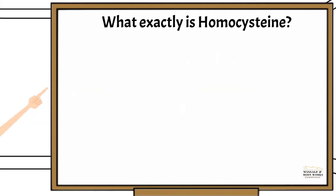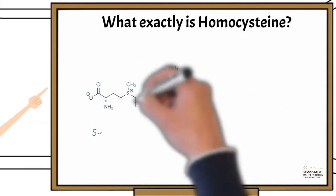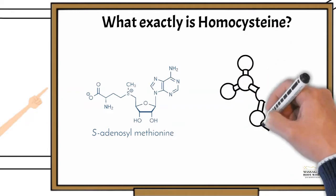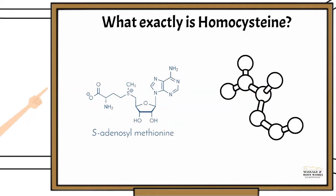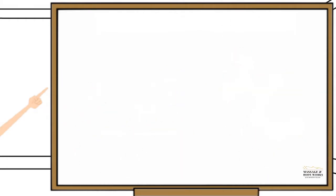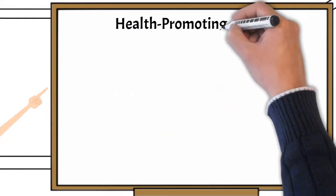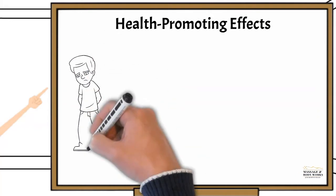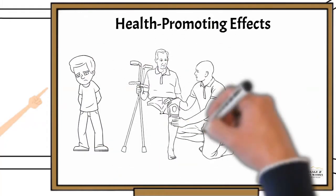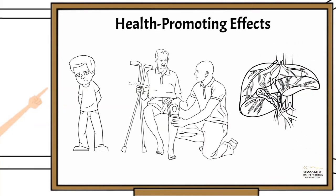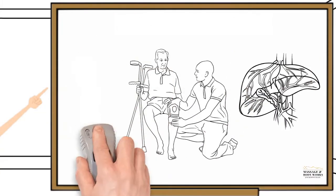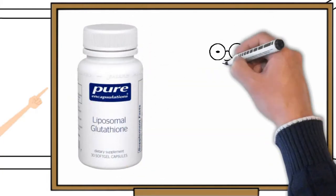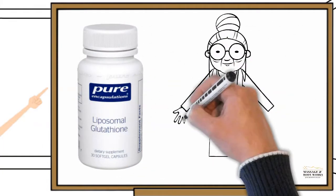Normally, homocysteine found in your blood gets converted into two substances called SAME or S-adenosylmethionine and glutathione. Both SAME and glutathione have health-promoting effects. Specifically, SAME helps to prevent depression, arthritis, and liver damage. Glutathione is a powerful antioxidant and detoxifying agent that helps to slow down aging.